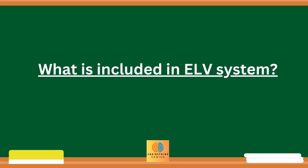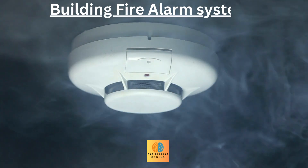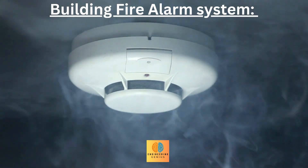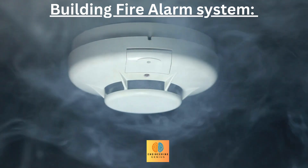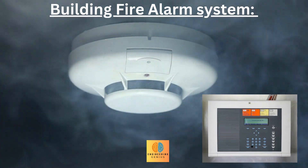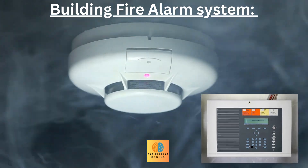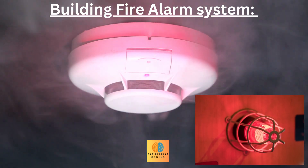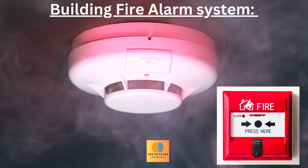Now let's see what is included in ELV system. One of them is building fire alarm system, which includes fire and gas detectors, building fire alarm panel, building management system, beacon lights, manual call points and heat detectors.